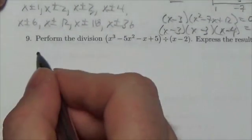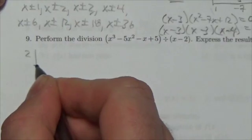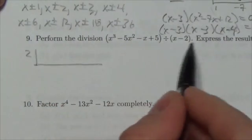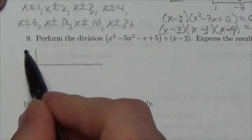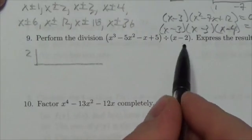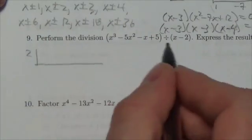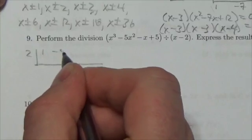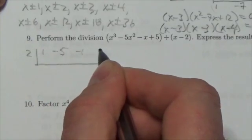We're going to put a 2 up front here, because when I do the division, I change the sign on that second term. My coefficients are 1, negative 5, negative 1, and 5.